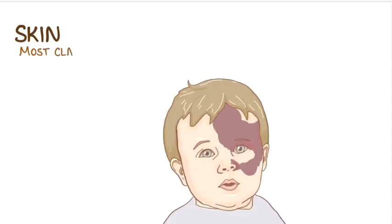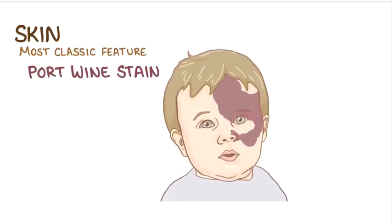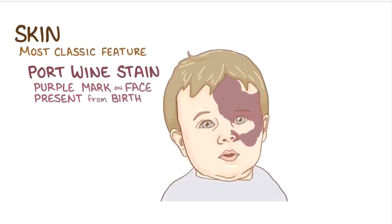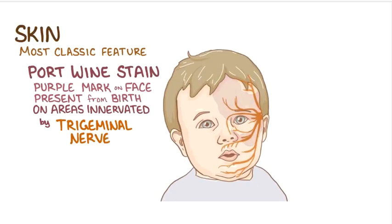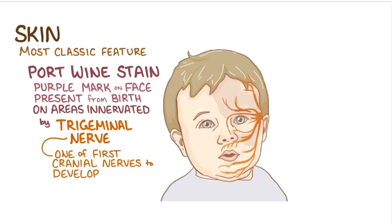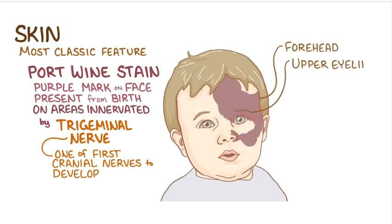In the skin, the most classic feature is a port wine stain, which is a purple mark on the face that's generally present from birth, as well as in the areas innervated by the trigeminal nerve. It's thought that the trigeminal nerve is involved because during embryological development, it's one of the first cranial nerves to develop from the neural crest cells. Typically, the port wine stain covers the forehead and upper eyelid on one side of the face, but in some it covers the whole face.